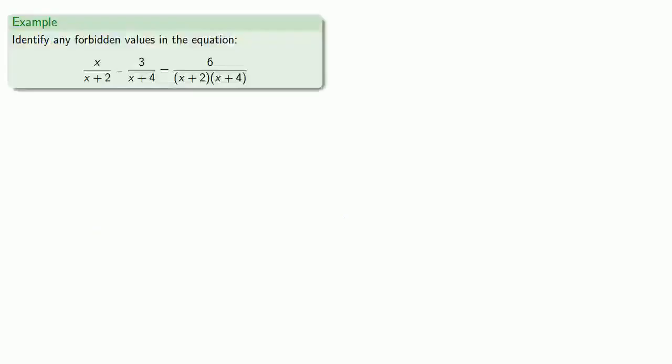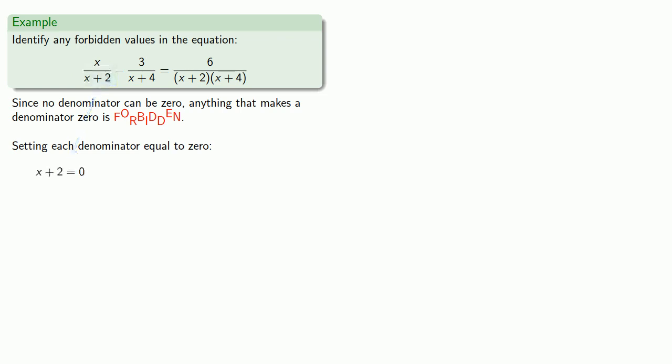So here's a nice rational equation. Let's begin by identifying any forbidden values. Since no denominator can be zero, anything that makes a denominator zero is forbidden. So let's see what we have to avoid by setting each denominator equal to zero. So if x plus two equals zero, then x is? If x plus four is zero, then x is?